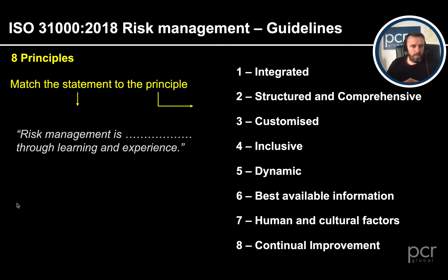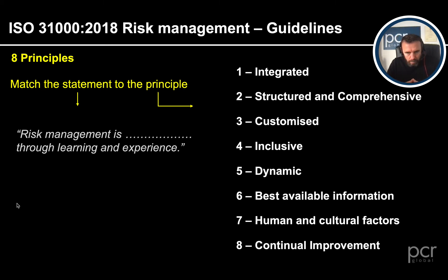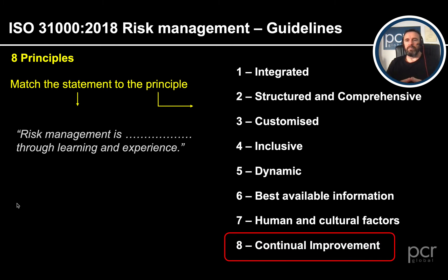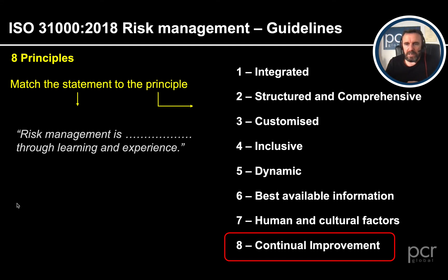The last one: risk management is continually improved through learning and experience. That is continual improvement — plan, do, check, act. It's a cycle. We've got to go forward all the time; we won't get these things right first time, but next time round we will. So that's it — those are the eight principles. This is part of the delivery I'm working on and I thought I'd share it.